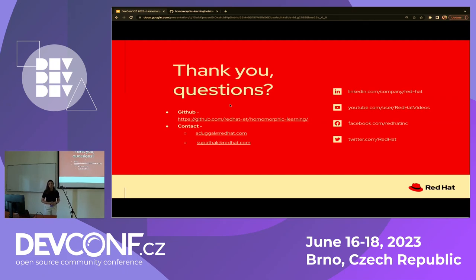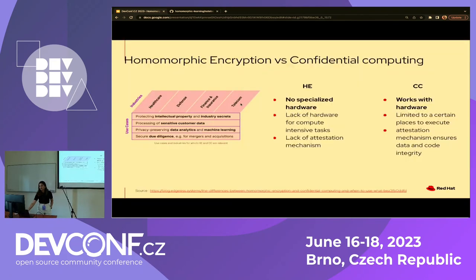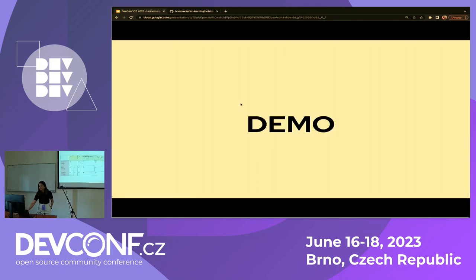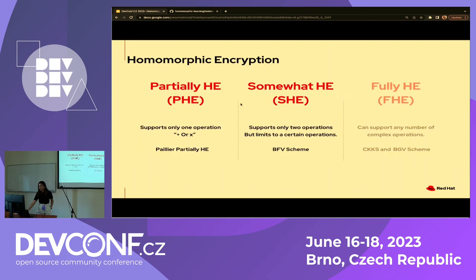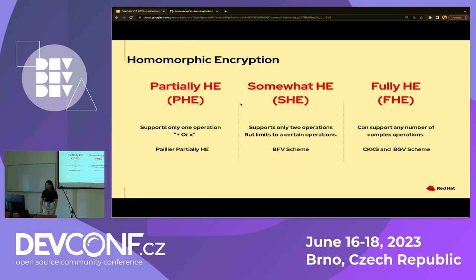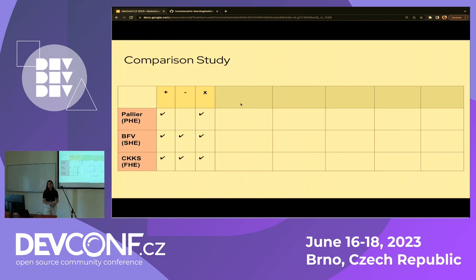Question: Do the Python toolkits for fully homomorphic encryption support BGV in addition to CKKS? Response: Yes, fully homomorphic encryption has both CKKS and BGV schemes, and most libraries that support CKKS also support the BGV scheme.